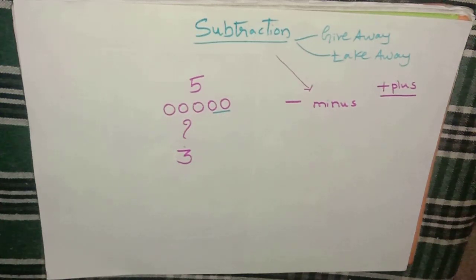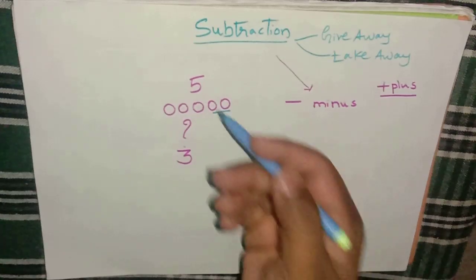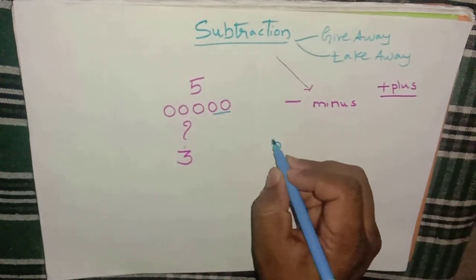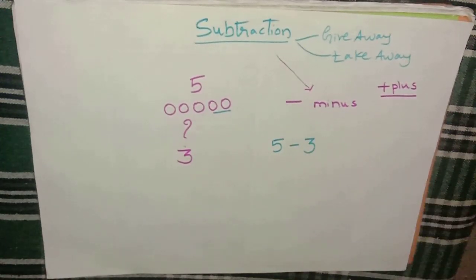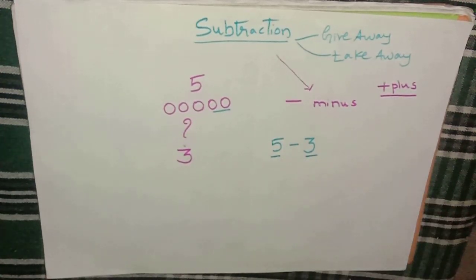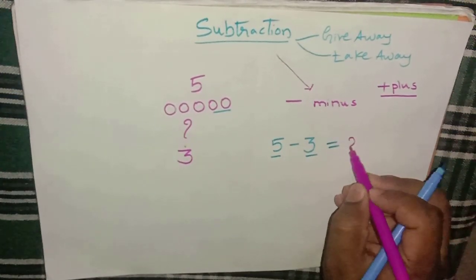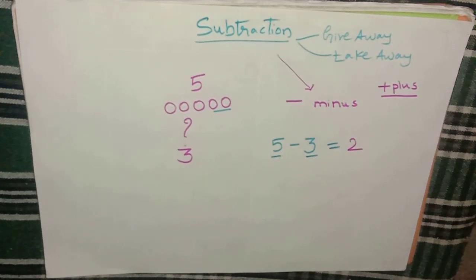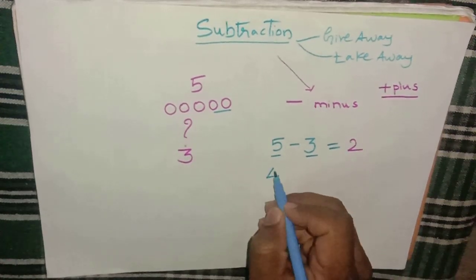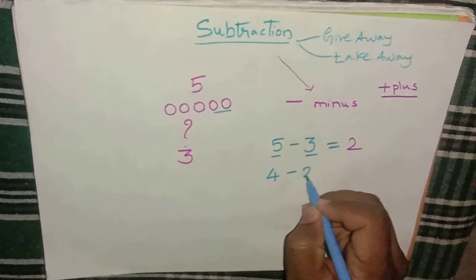Let us see some problems. For example: five balls minus three balls. In five balls, you give away three balls — you are left with how many balls? Two balls. Clear with this example.